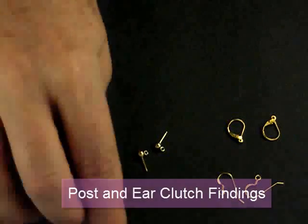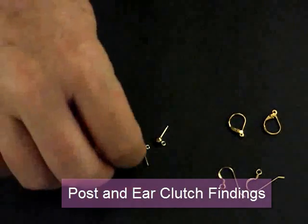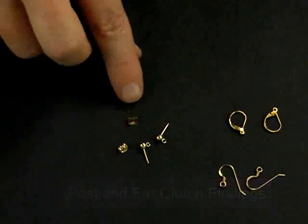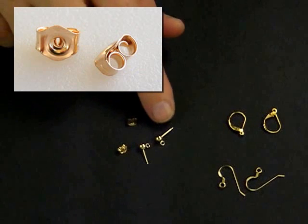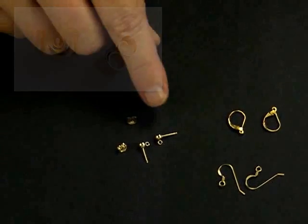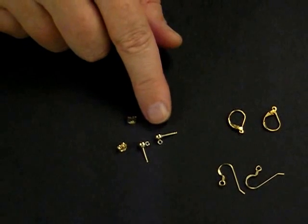Another ear wire is the post type of ear wire, and with that post type of ear wire we use a finding called the ear clutch. So you can see the posts have a loop. This particular post has a loop, and we could hang beads or an earring body or something like that from this post type of ear wire.